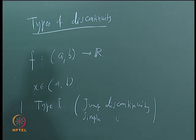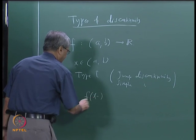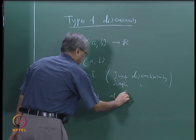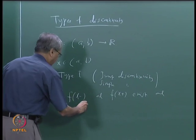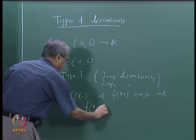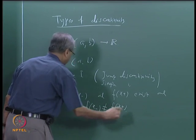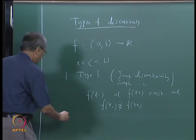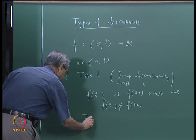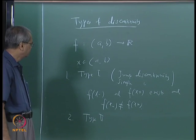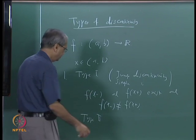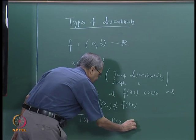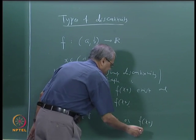Type 1 means that the left-hand limit and the right-hand limit both exist, but their values are different: f(x⁻) exists and f(x⁺) exists, but f(x⁻) ≠ f(x⁺). Type 2 discontinuity means that either f(x⁻) or f(x⁺), or both, do not exist.